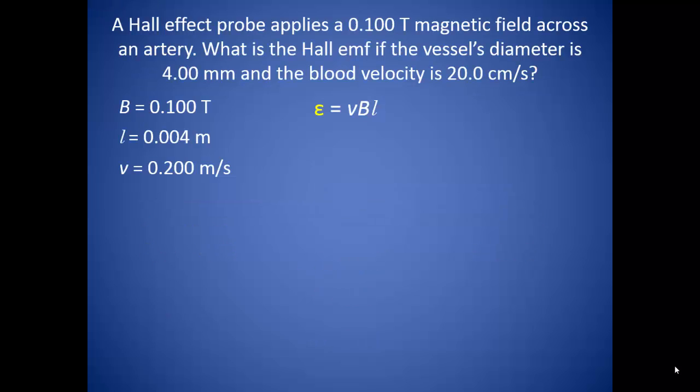Suppose a Hall effect probe applies a 0.1 tesla magnetic field across an artery. What is the Hall EMF if the vessel's diameter is 4.00 millimeters and the blood velocity is 20 centimeters per second?